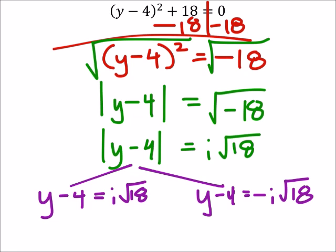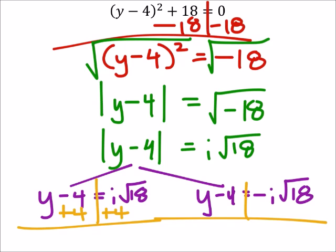Okay, well at this point, and this works for both equations by the way, I'm just going to add 4 to both of these equations, on both sides of both equations. So right here I would have y = 4 + i√18. And over here I've got y = 4 - i√18.